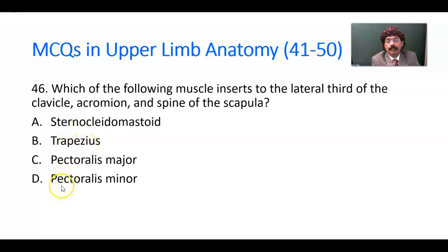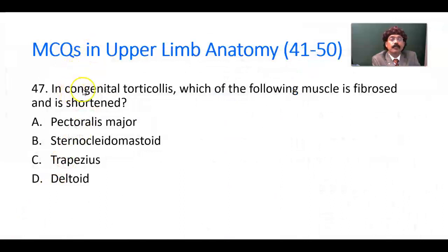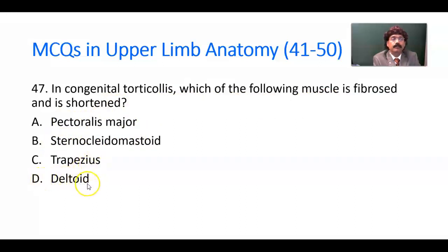Question number 47. In congenital torticollis, which of the following muscles is fibrous and shortened? Options: pectoralis major, sternocleidomastoid, trapezius, deltoid. The answer is the sternocleidomastoid muscle.